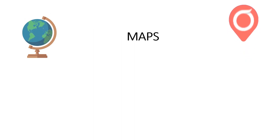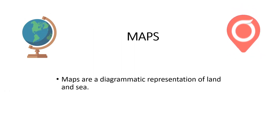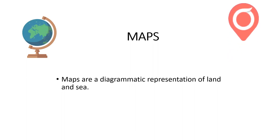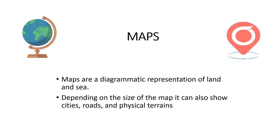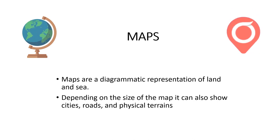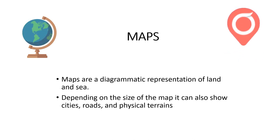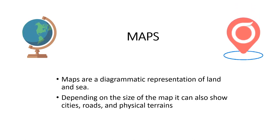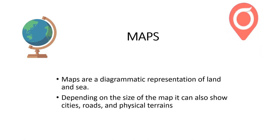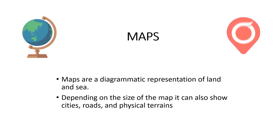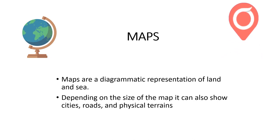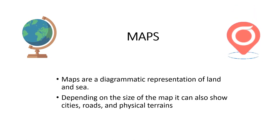The next important visual aid is maps. Maps are a diagrammatic representation of land and sea. Depending on the size of the map, it can show cities, roads and physical terrains. Looking at the map, you can know about the best routes to reach a specific location. Maps may also highlight popular tourist attractions — for example, in Singapore: Gardens by the Bay, Universal Studios, Marina Bay Sands, etc. With Google Maps, which are easily available on our phones, it has become very easy to navigate from one place to another.